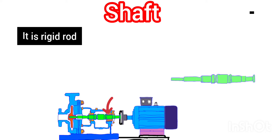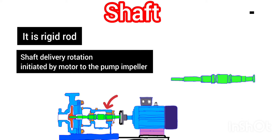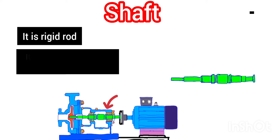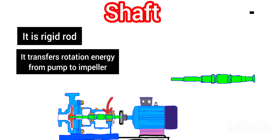The next component is the shaft. It looks like a rod — you can see the image. It is a rigid, solid mechanical device. It takes the rotation or mechanical energy from the motor with the help of the coupling and delivers that mechanical energy — the rotation — to the impeller which is inside the casing.